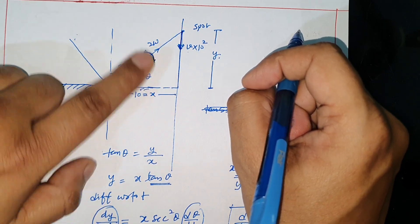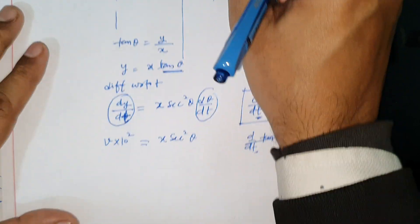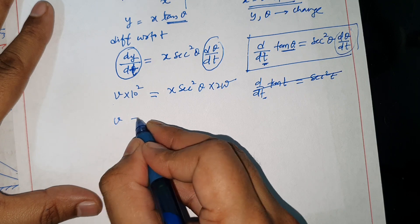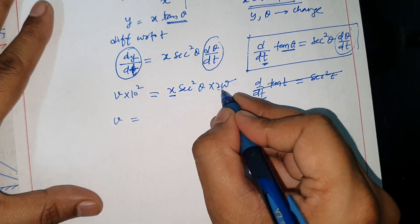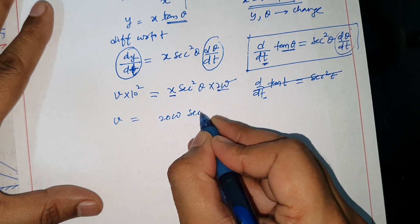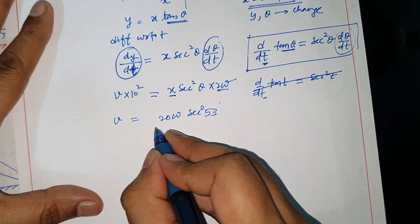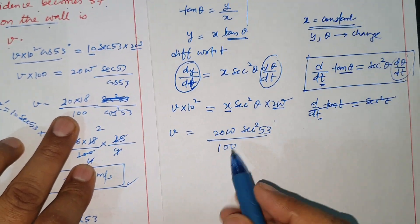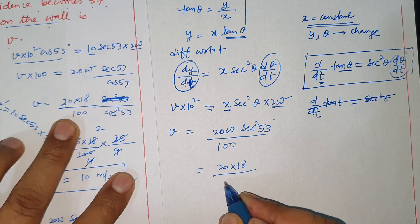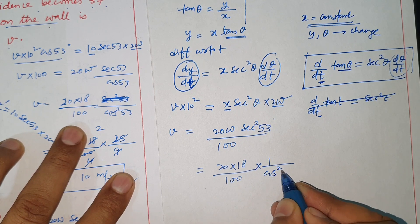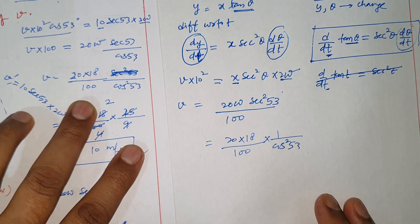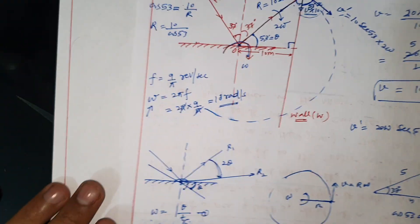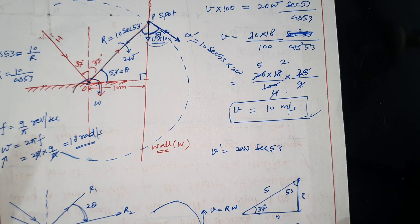So the equation becomes: V×10² = X sec²θ × 2ω. With X = 10, θ = 53°, ω = 18, this gives the same calculation as before: 20ω sec²53° / 100 = 10 meters per second. So V = 10 meters per second. I hope you understood the question.